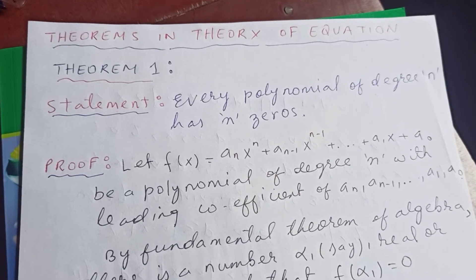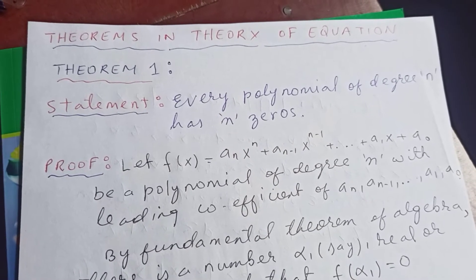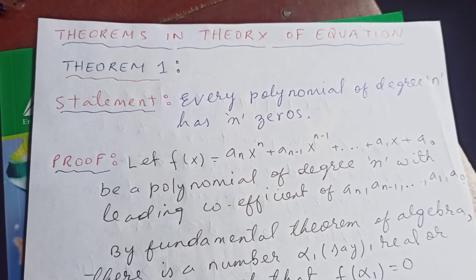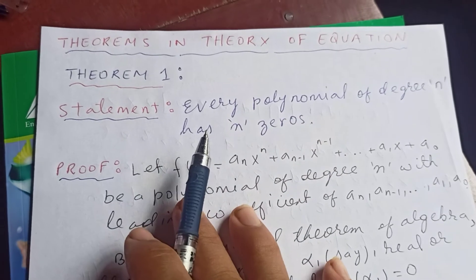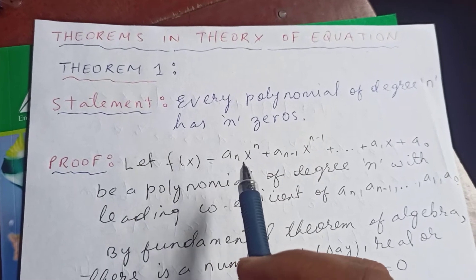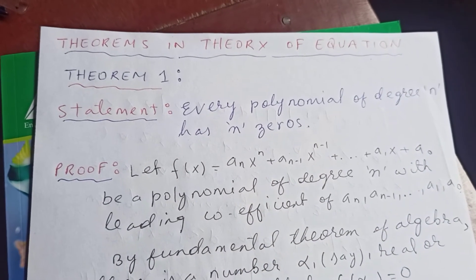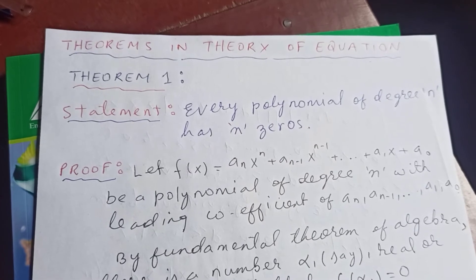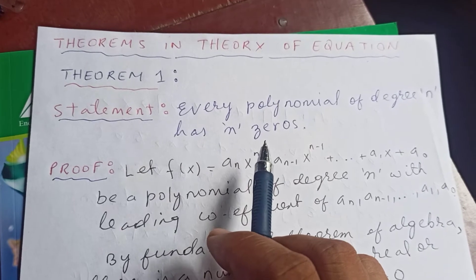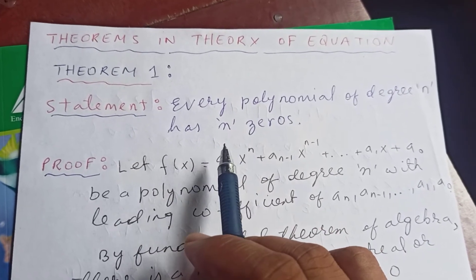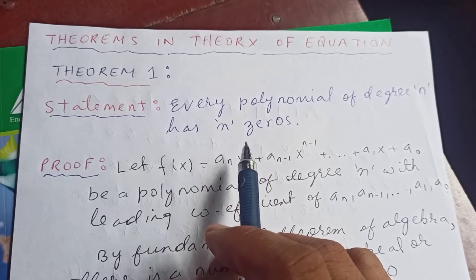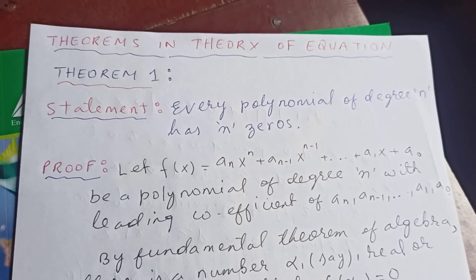Hello guys, thanks for watching my video. Today we are going to discuss the theory of equations. So we have Theorem 1: every polynomial of degree n has n zeros — in other words, every polynomial of degree n has n roots.